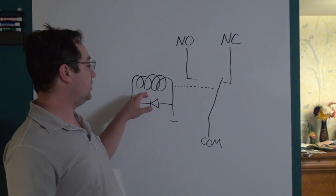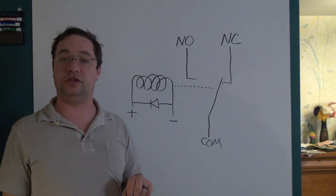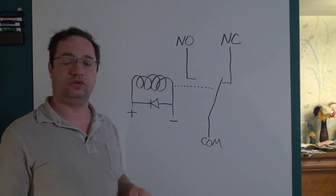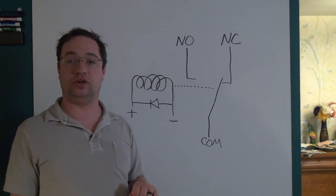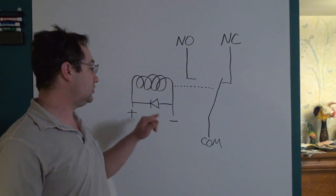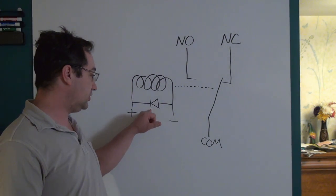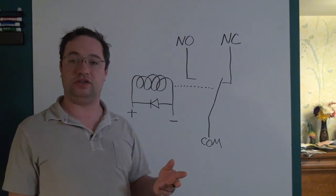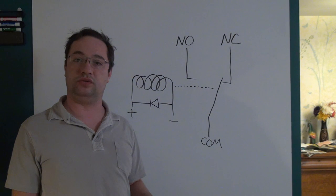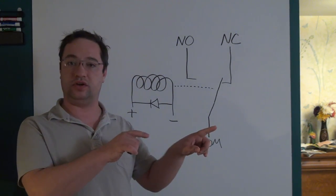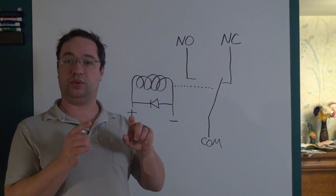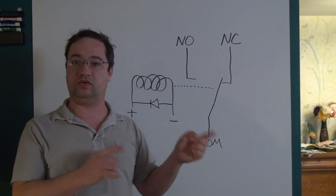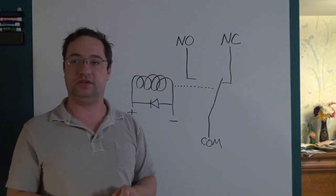If the relay does not have a diode built in — some DC-only relays will have it built in — you need to install this diode externally, because you will destroy things on a DC relay without it. AC relays don't need this diode because whatever is driving the AC relay will be tolerant of a spike, plus the field inside the coil works its way back and forth due to the AC sine wave.